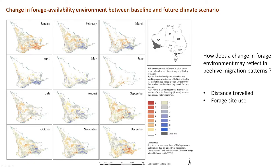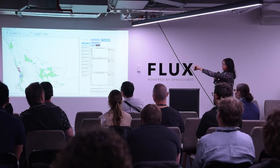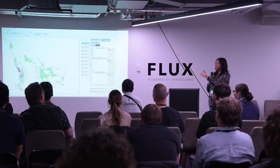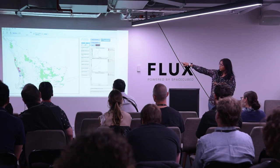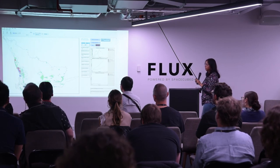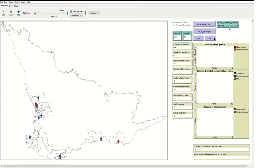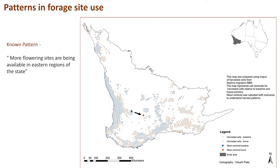This is a stacked SDM — species distribution model — for all 30 species, showing for each species and each month what change you can see. Most of the change in species distribution occurs on the eastern side. The green portion shows flowering species occurring in individual months, and based on their decisions, beekeepers move their hives to different locations. The output we're looking at is how far they travel per run, how it affects travel distance, and how it changes their harvest locations. Thank you.